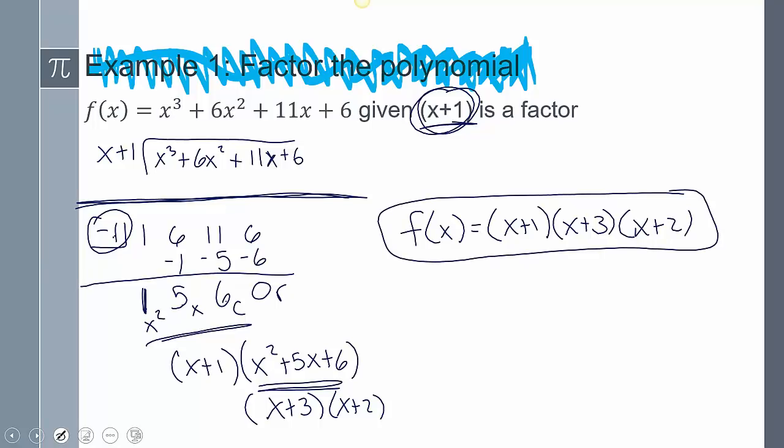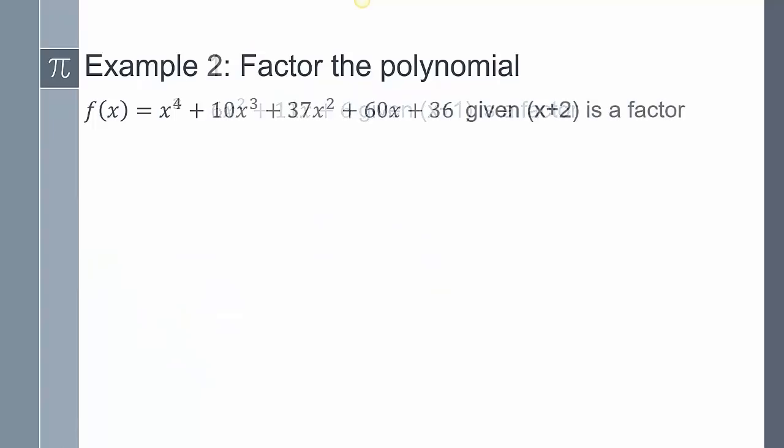Now, we do have to be careful of multiplicity. In this instance, I didn't have to check for multiplicity because it already factored into something that I can use to factor it further. Right? We know how to factor quadratic equations. But on this next one, this is an x to the 4th. That means when I factor it, I know it's going to break down into something x cubed. So I have to check for multiplicity again. So given that this is a factor, negative 2 is in the box.